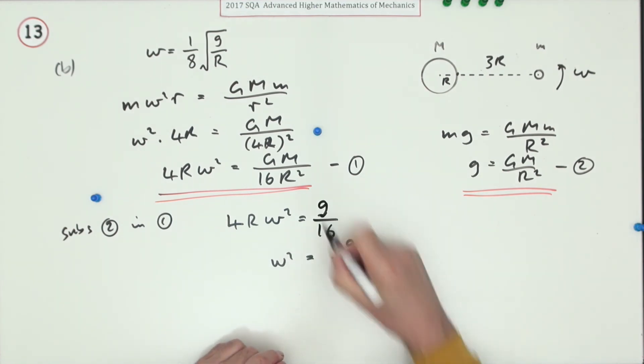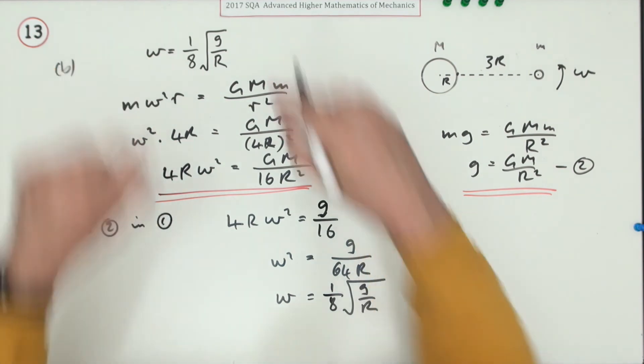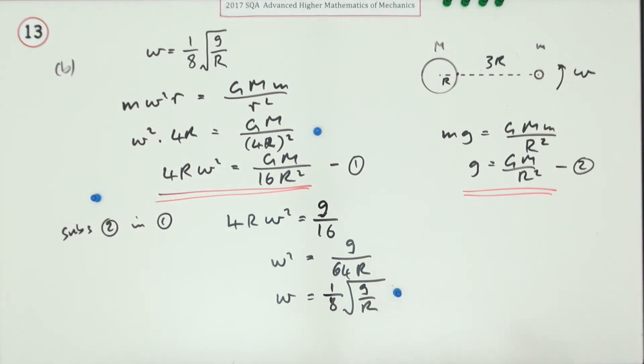So finally, omega is going to be the square root. 64's got an exact square root so it can escape the square root brackets, but the g and the r are stuck inside, as required for the last mark.